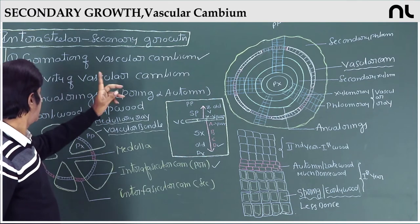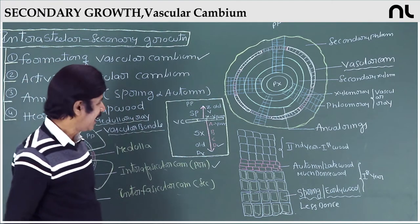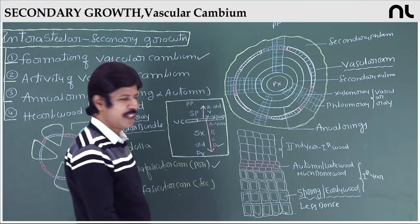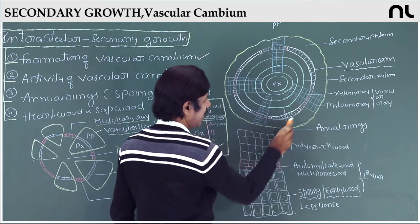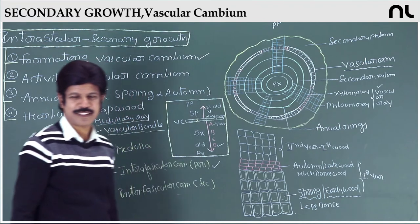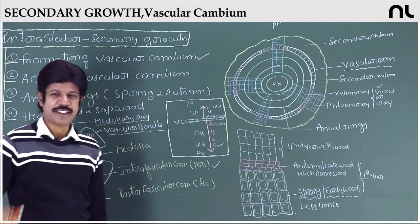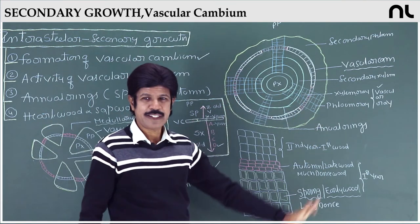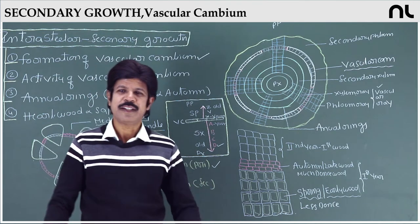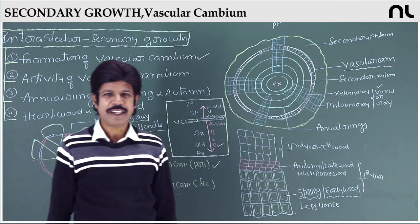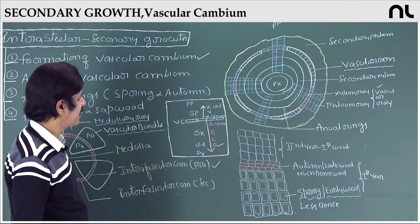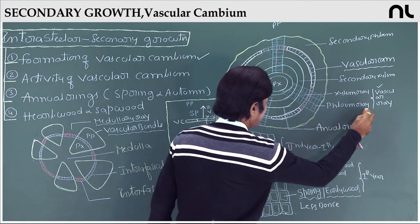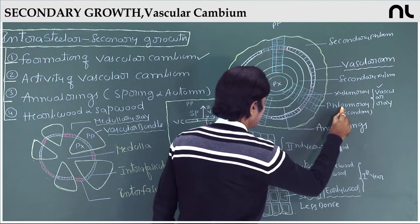The vascular cambium produces radiating structures — uni-, bi-, or multiseriate — present in xylem called xylem rays and in phloem called phloem rays. Collectively these are called vascular rays. In the primary plant body, these are primary medullary rays, which are extensions of the medulla. In the secondary plant body, they are secondary medullary rays, also called vascular rays (xylem ray and phloem ray). They help in radial conduction. These uni-, bi-, or multiseriate structures are formed by the interfascicular cambium.